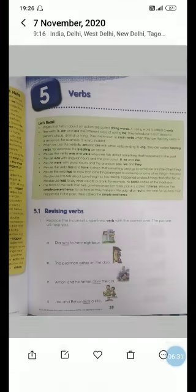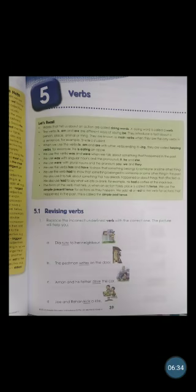We use 'had' to show that something belonged to someone in the past. We also use 'had' to talk about something that has already happened or things that affected us — for example, what we ate or drank. For instance: 'He had a coffee at the snack bar.' The form of the verb that tells us when an action takes place is called a tense. We add 'd' or 'ed' to the verb for actions in the past — this is called the simple past tense.